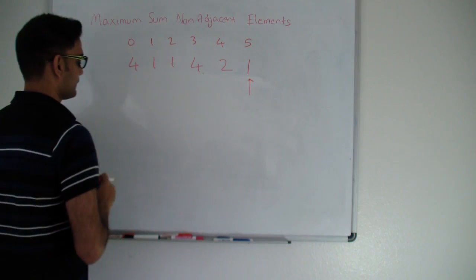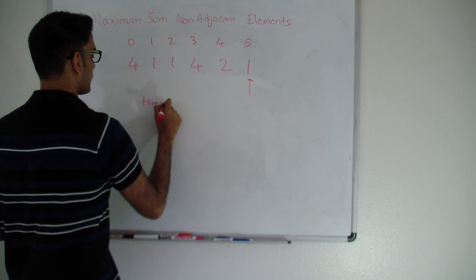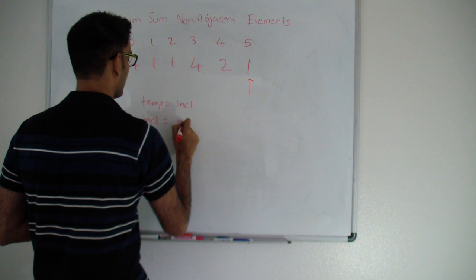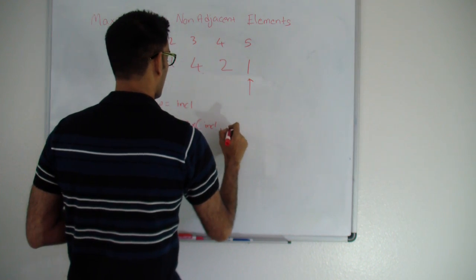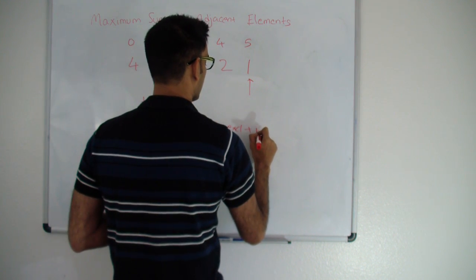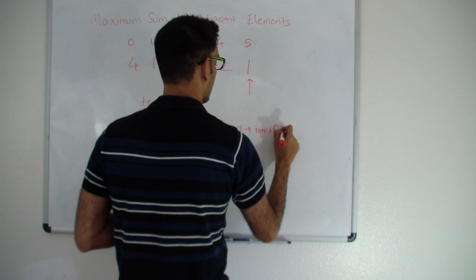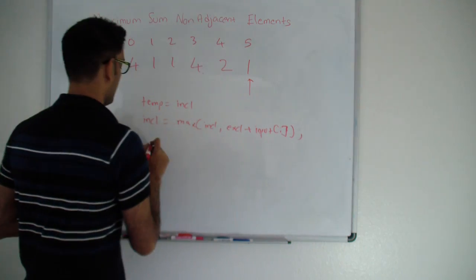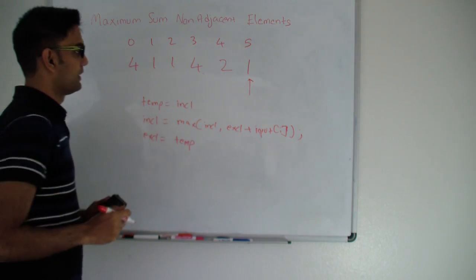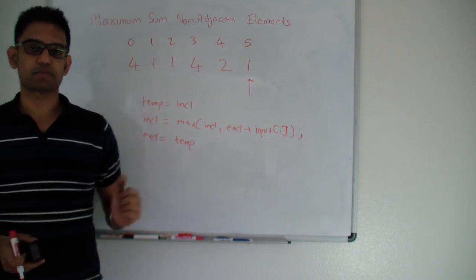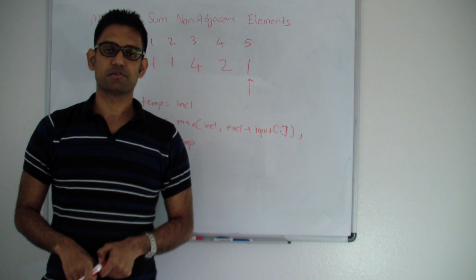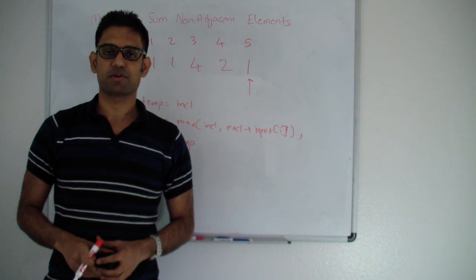Let me write the formula: store the old inclusive first, then calculate the new inclusive as max(old inclusive, exclusive + input[i]), and set exclusive to the old inclusive. If you want the full solution, go to my GitHub at github.com/mission-peace/interview-wiki. For similar questions, check my YouTube channel at youtube.com/user/tusharroy2525. Thanks for watching!